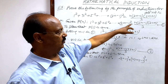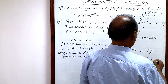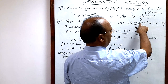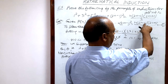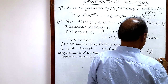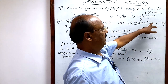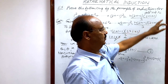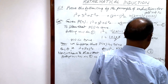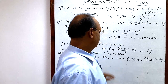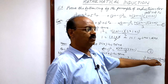The right hand side with n = R+1 is (R+1)(2(R+1)−1)(2(R+1)+1)/3. That simplifies to (R+1)(2R+1)(2R+3)/3. This is what we need to establish — we have to prove that LHS equals RHS.